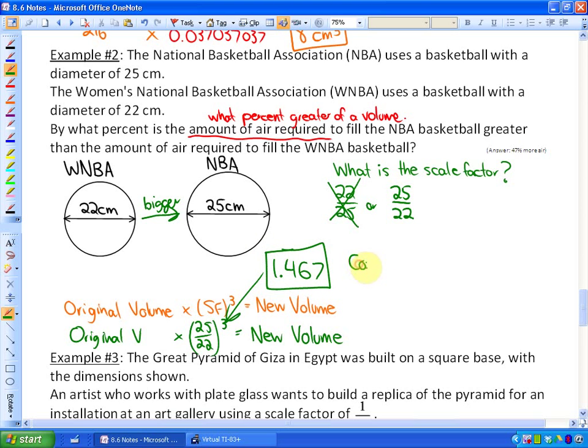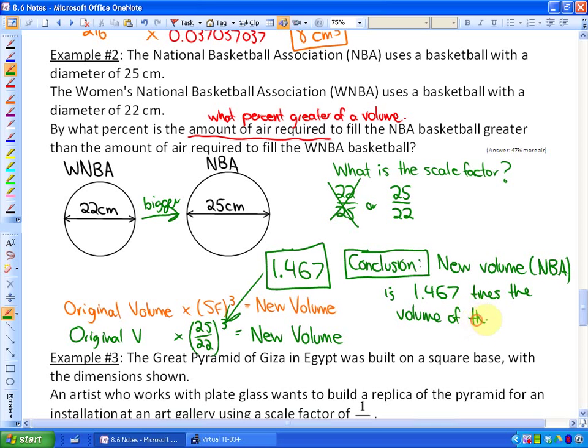So, conclusion. Here's the big idea. Even though we don't know the volumes of each of those particular basketballs, what we know is that the new volume, in other words, the NBA ball, is 1.467 times the volume of the original. And the original is the WNBA ball.